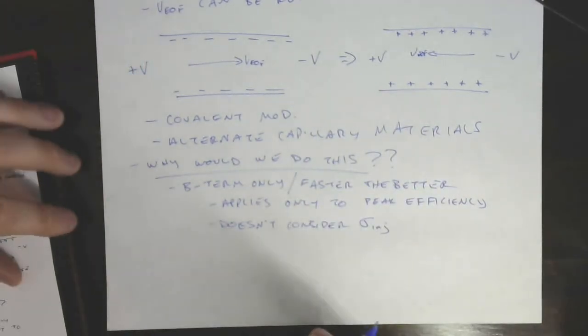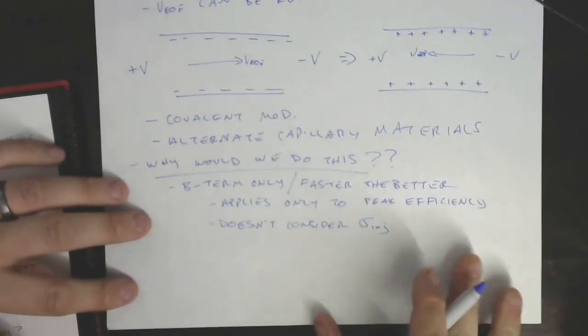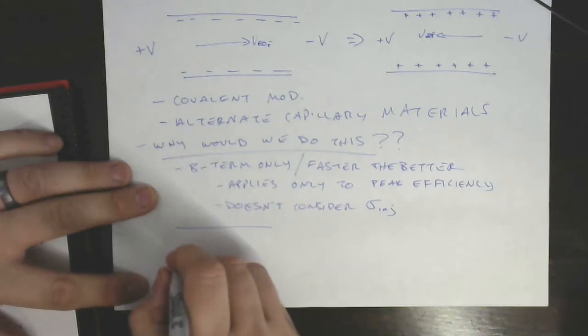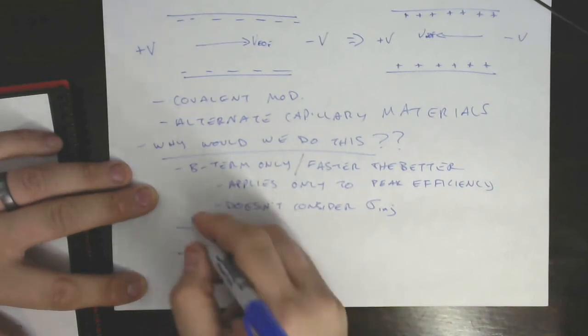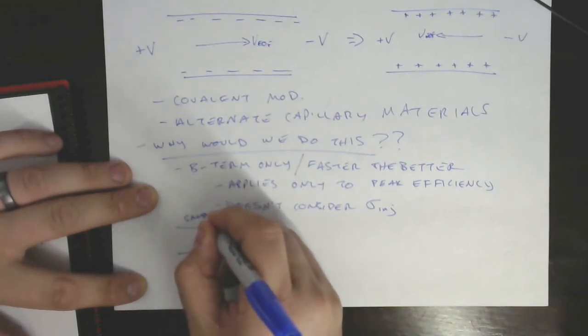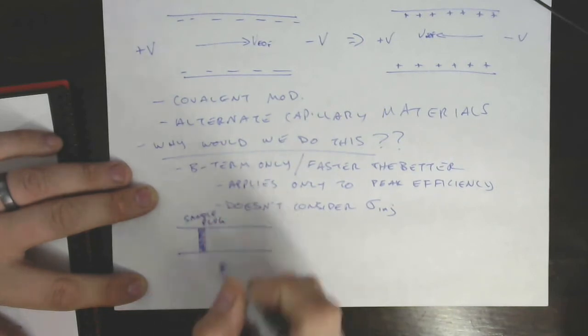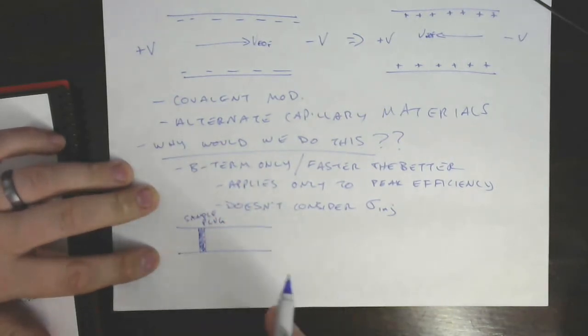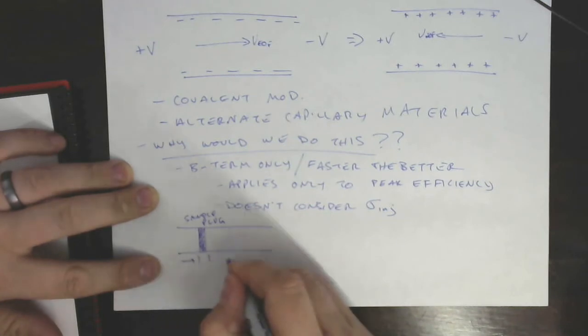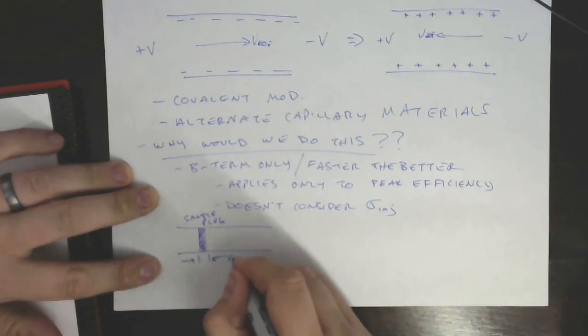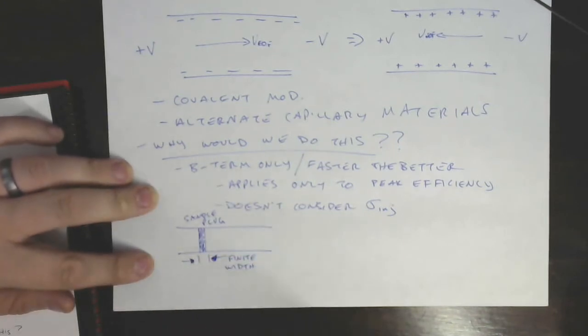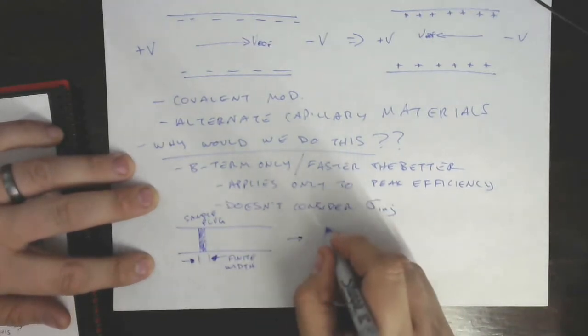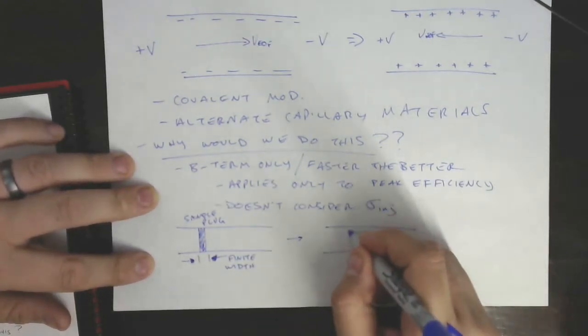So here's an injection band. There's some sample plug, right? Here's our sample plug. We're going to assume this contains two analytes, Analyte A and Analyte B, right? And it has some finite width. Okay, so whatever that finite width is, if we want to separate Analyte A and B, what we're actually trying to get them to do is travel a specific distance, a distance greater than the width of the injection plug, right?